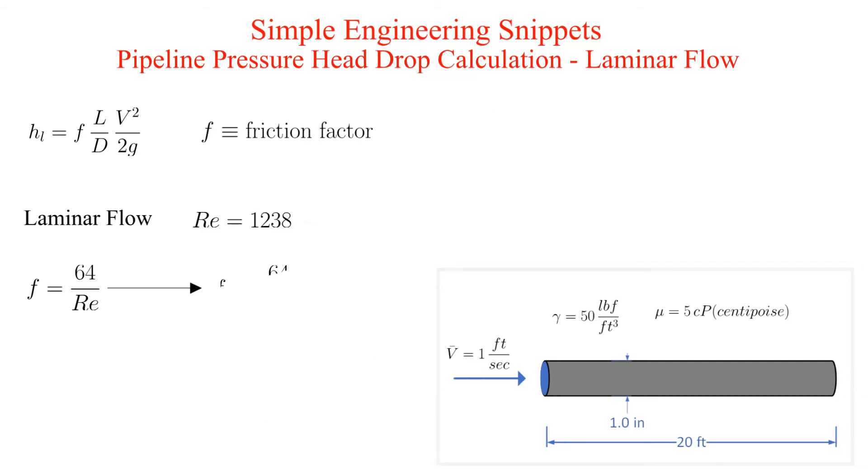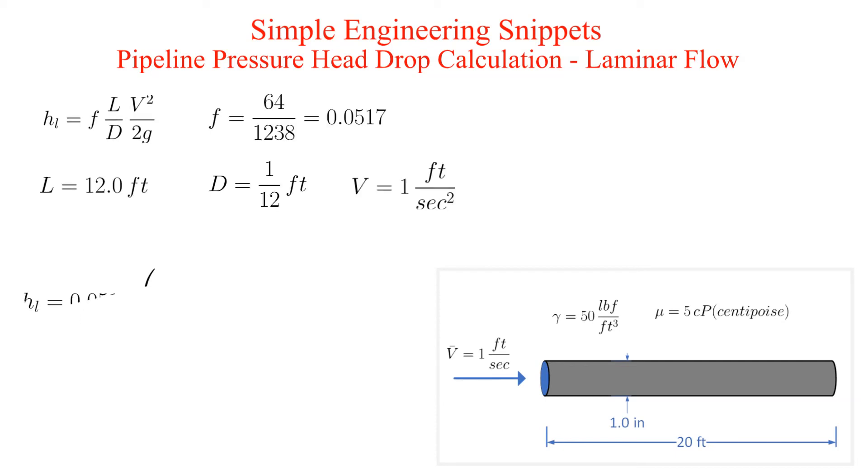Now we can directly calculate the friction factor which comes out to be 0.0517. Plugging everything into the Darcy-Weisbach equation, we obtain that the head loss is equal to 0.193 feet.